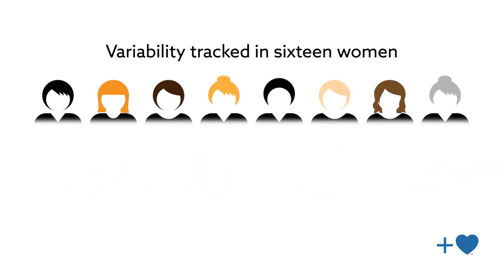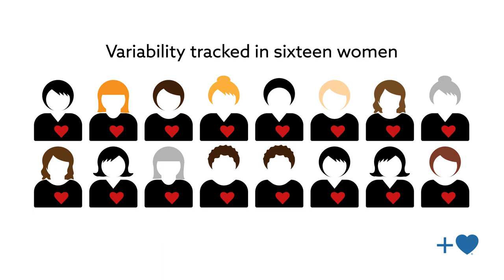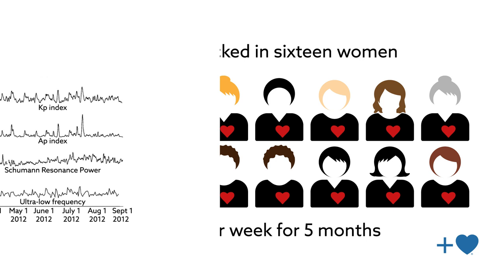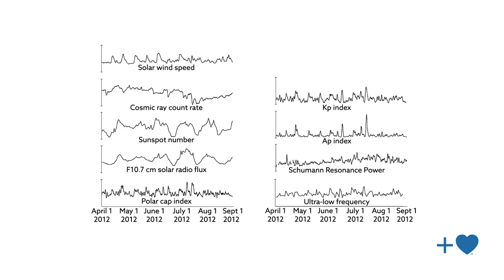This variability was tracked in 16 women, who wore heart rate monitors for 72 hours per week for five months. The data were then compared to changes in cosmic rays as well as geomagnetic and solar activity occurring over the same period.